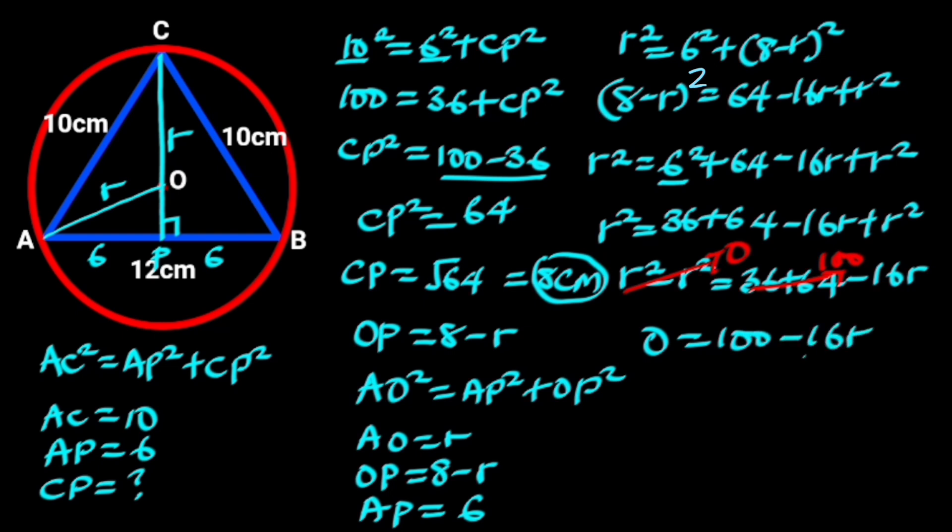Next, we take minus 16 to the left side. Minus 16 will become positive since it is negative. Doing so will give us 16R equals 100. To find R, we divide both sides by 16. 16 divided by 16 will leave us with R, and 100 divided by 16 is 6.25. Hence, the radius R of the circle is 6.25.